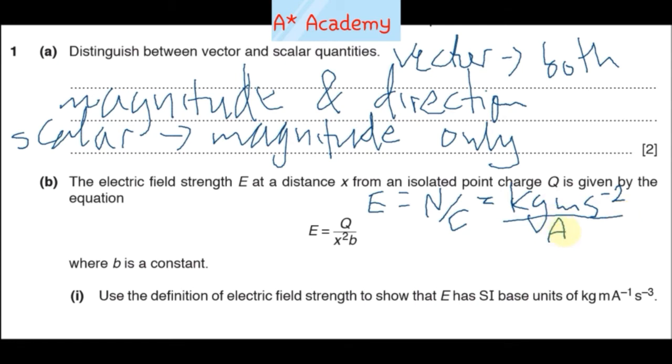Like that, right? So rewriting this will give us kg·m·s per amp and s to the minus 3, just as they want there. That's what we get.